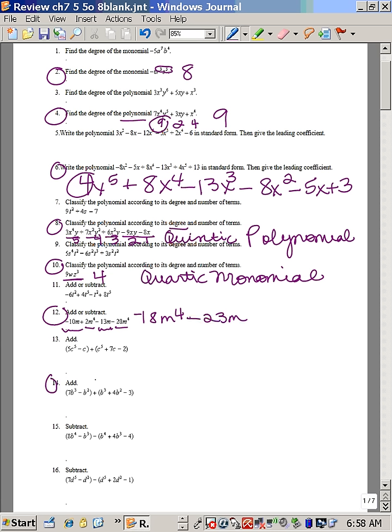Number 14, since I'm adding the polynomials, I can just take off the parentheses as I work them. Looking at the common terms, I have a 7 b to the third and a positive b to the third, which makes 8 b to the third. Then I have a negative b squared and a positive 4 b squared, so that makes 3 b squared. And on the end by itself, a minus 3, which is the constant.